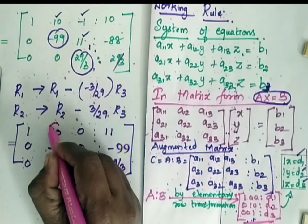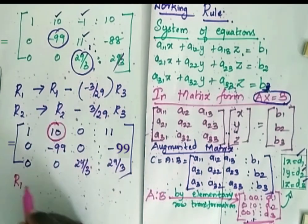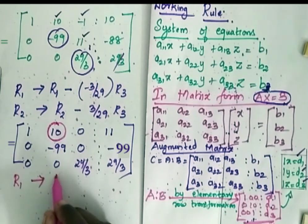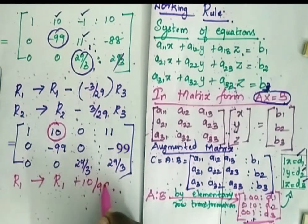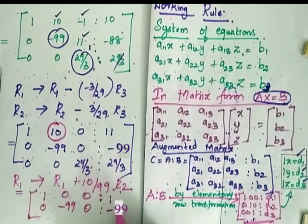Now I have to replace this by 0. So now my R1 is R1 plus 10 by 99 R2. So my matrix has become 1, 0, 0 and here it will become 11. Then R2 no change. You will be getting minus 9. R3 also no change with same 29 by 3.